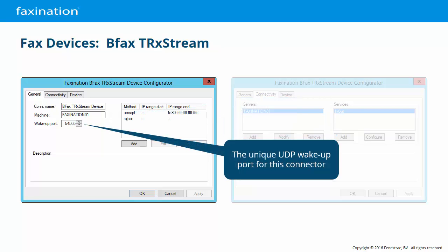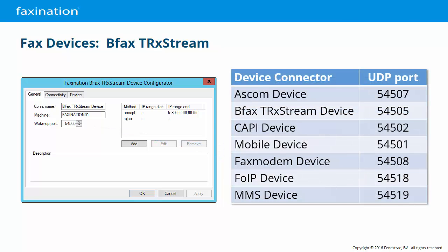The wake-up port is the UDP port where this connector will listen for new connections from the FaxNation kernel. This port is unique for all host and device connectors. This is a complete list of the unique UDP wake-up ports used by FaxNation 2016 device connectors, which you can find in the FaxNation 2016 Administrator's Guide. You may change these if you have specific needs such as firewall traversal, but you must change the port on both sides of the contract — both the kernel and the connector.